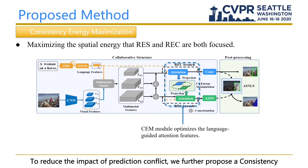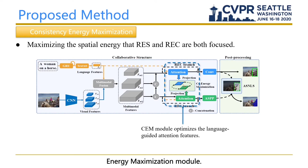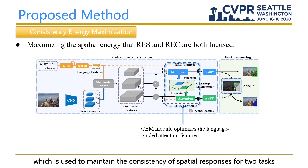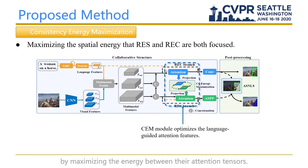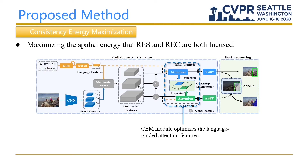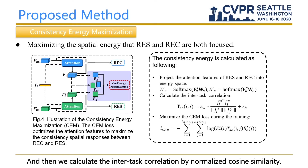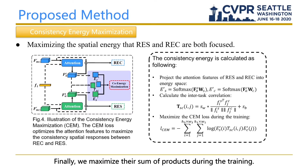To reduce the impact of prediction conflict, we further propose a Consistency Energy Maximization module (CEM). CEM builds a language-centered connection between two branches, used to maintain the consistency of spatial response for both tasks by maximizing the energy between the attention tensors. Specifically, we first project the attention features into a second-order energy space, then calculate the inter-task correlation by normalized cosine similarity. Finally, we maximize the sum of products during training.